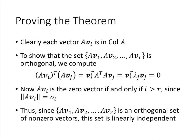To show the Avᵢ form a basis for the column space of A, we need to show they span the column space, are linearly independent, and are orthogonal. For orthogonality: A·vᵢ dotted with A·vⱼ equals vᵢ^T (A^T A) vⱼ = vᵢ^T (λⱼ vⱼ) = λⱼ (vᵢ · vⱼ) = 0, since the vᵢ's are orthogonal to each other. Since we have an orthogonal set of non-zero vectors, it's automatically linearly independent.